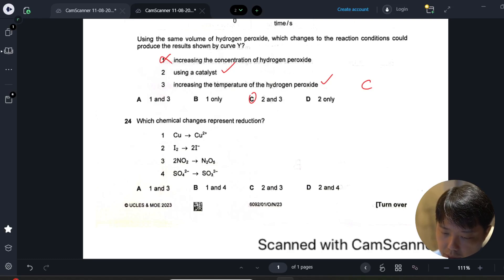All right, question 24. Basically they want you to find which one of the four represents reduction. Reduction means that there is a drop, there is a decrease in oxidation number. So evidently one is an increase from zero to plus two, so one is out.